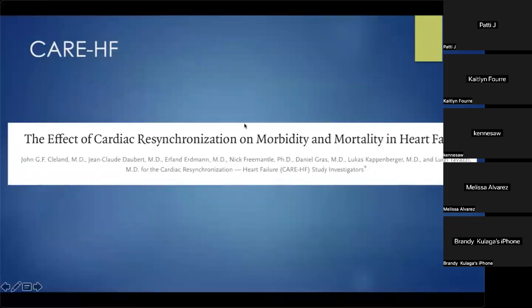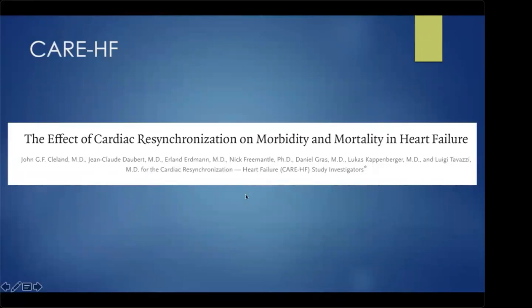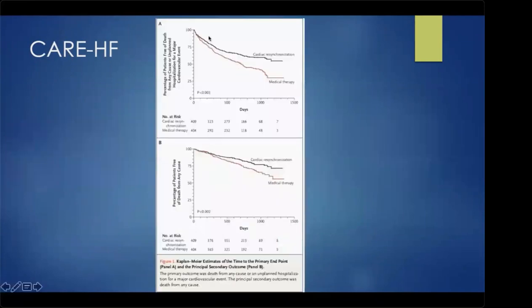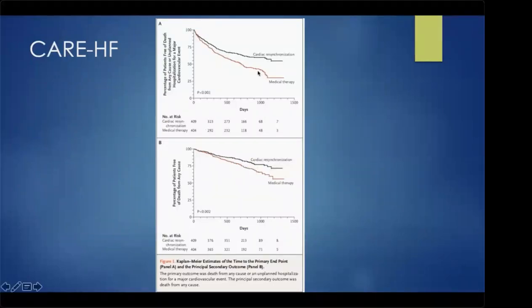CARE-HF came out a year later. It also looked at people with class 3 or ambulatory class 4 heart failure, a wide QRS, and signs of dyssynchrony on echo. CRT was associated with a significant reduction in heart failure, and over time this translated into a reduction in mortality.